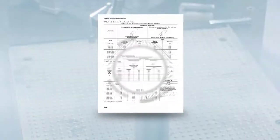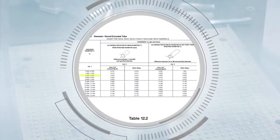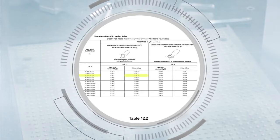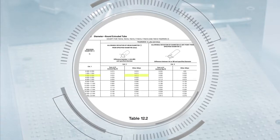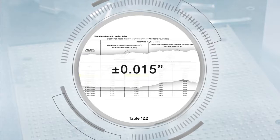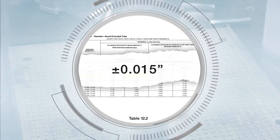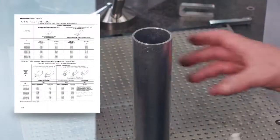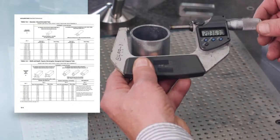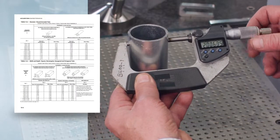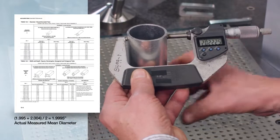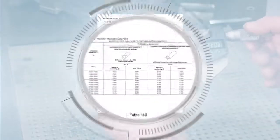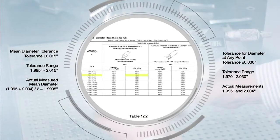Using table 12.2, we'll go to the row in column 1 for 2 to 3.999 inches, and across to the right side of column 2, since this tube is a 6000 series alloy, and find the mean diameter tolerance is plus or minus 0.015 inches from the specified diameter. Measuring the tube, we find the diameter ranges from 1.995 inches to 2.004 inches, so the mean diameter is 1.9995 inches, which is within the allowable plus or minus 0.015 tolerance for a 2 inch tube.